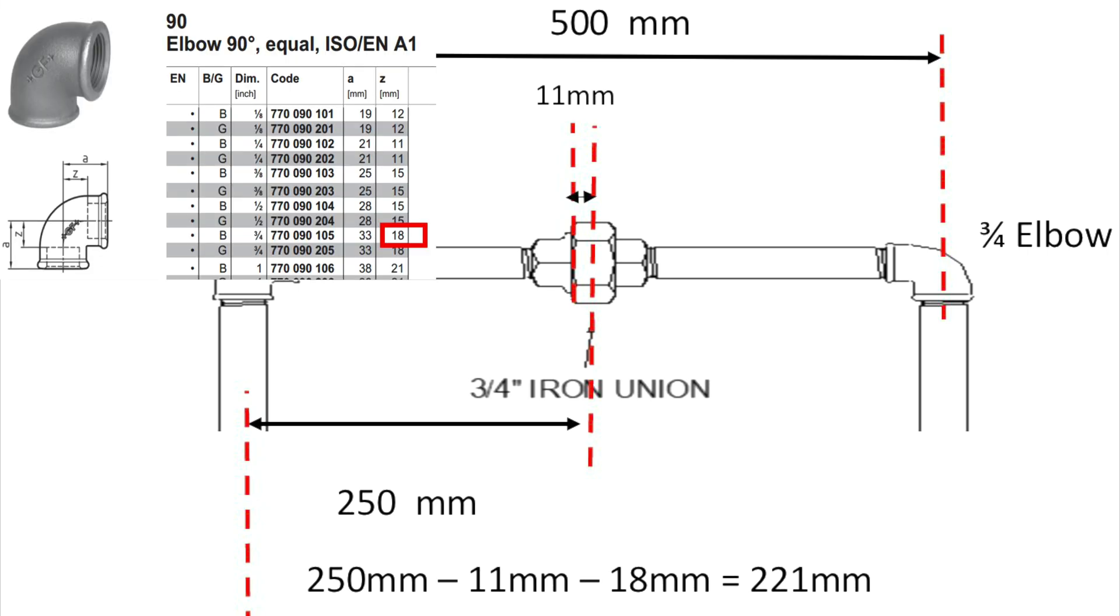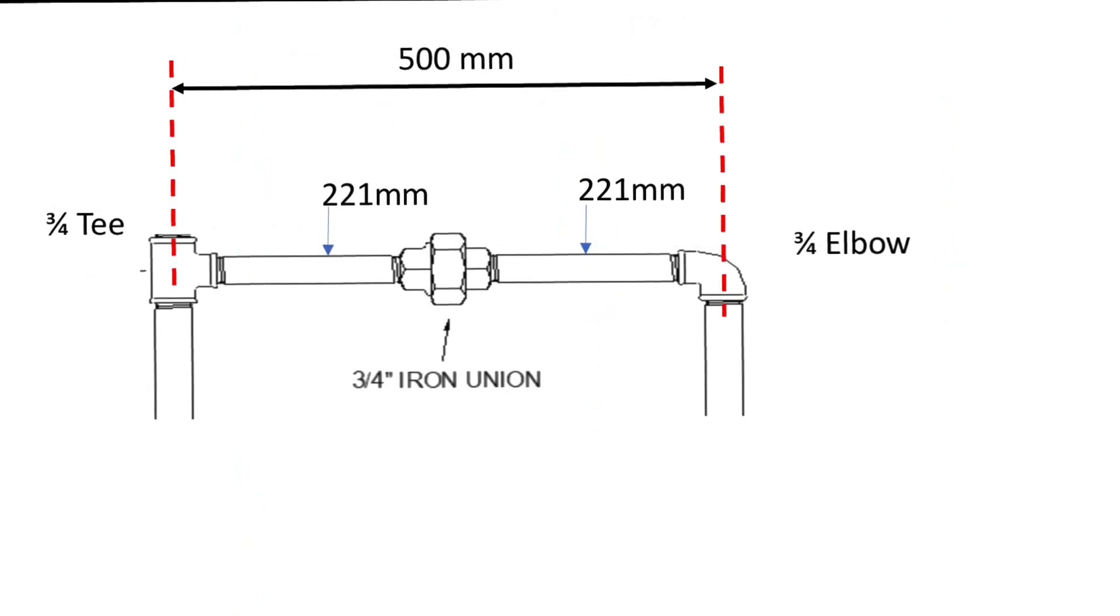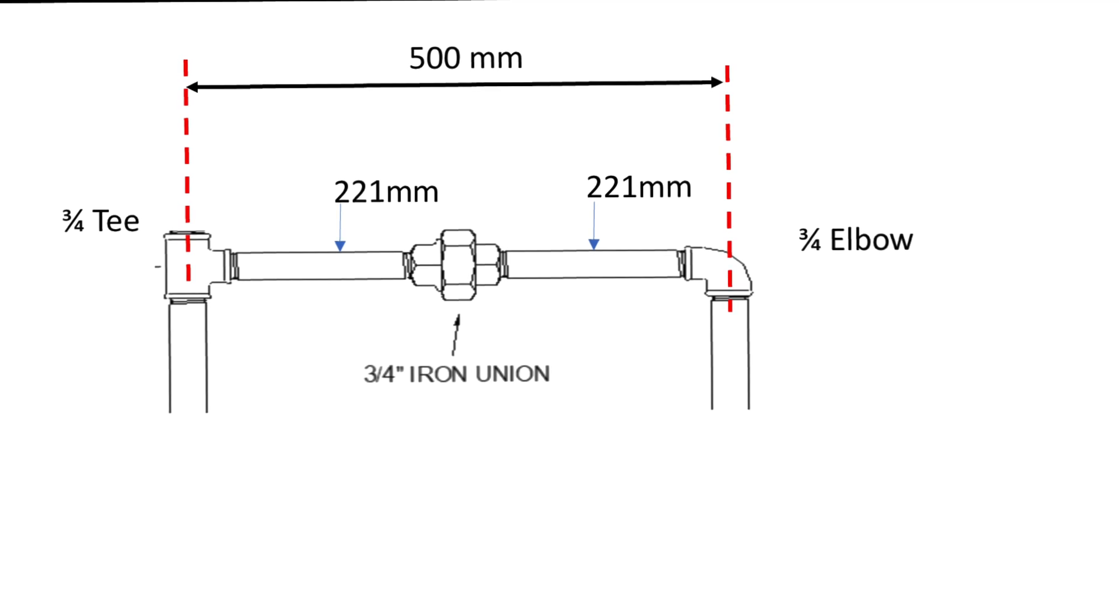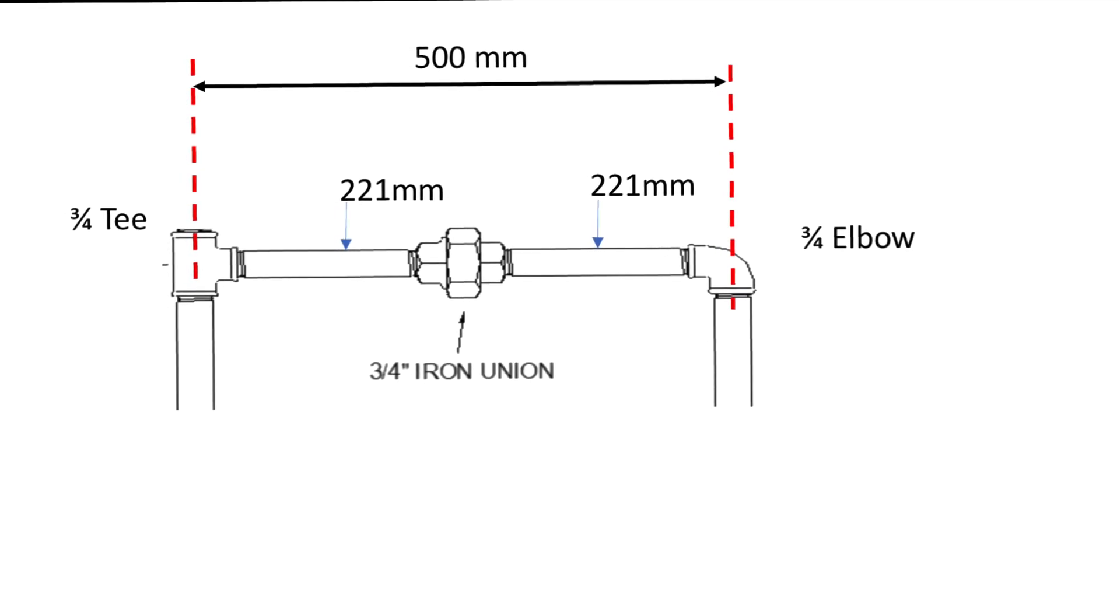Luckily, the elbow has the same Z dimension, so that is also going to be 221mm per side. So we cut each pipe 221mm to give us a 500mm centre to centre.